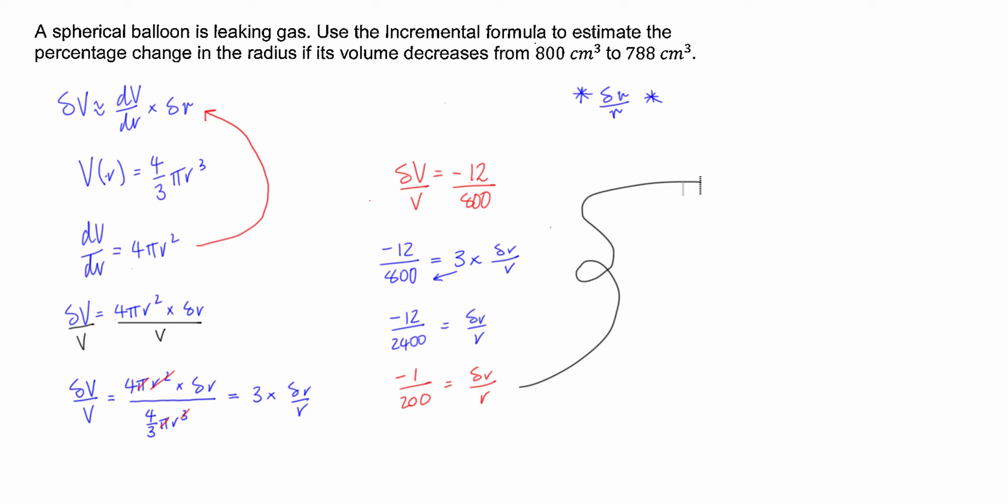And then I can say well negative 1 on 200 is the same as, we're looking for percentage change, negative 1 on 200 is the same as half of 1%. So therefore we can say that the percentage change, it's always good to write your answer down guys, is in the, what you've actually found is equal to negative 0.5 percent.